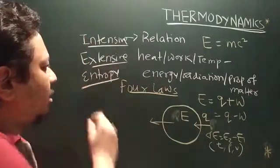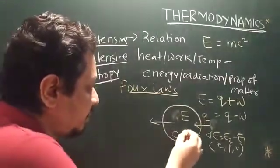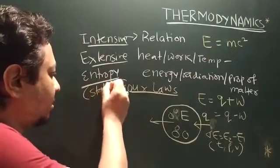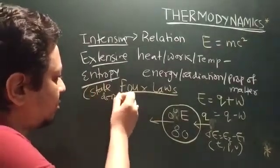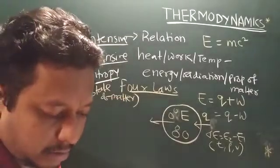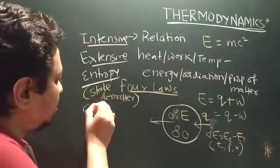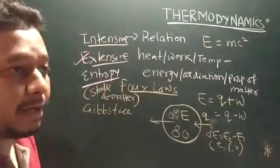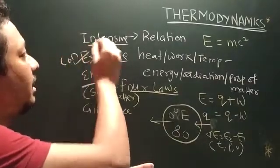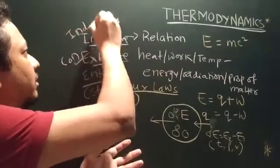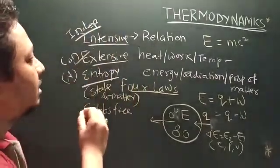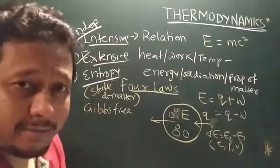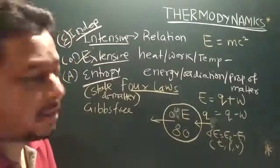Then you have extensive properties, also called extrinsic properties. These include mass, volume, energy, heat capacity, and entropy. Entropy is the degree of randomness of the system — the system contains many molecules, so entropy reflects their degree of randomness. Extensive properties depend upon the amount of molecules or concentration, whereas intensive properties are independent of concentration. For example, absorbance depends on concentration, but molar extinction coefficient is an intensive property.